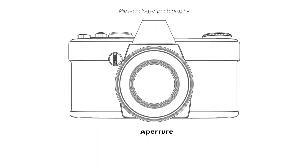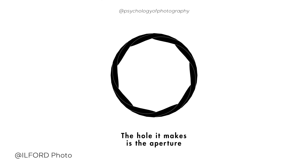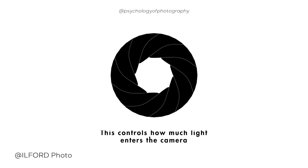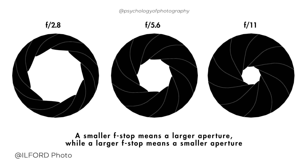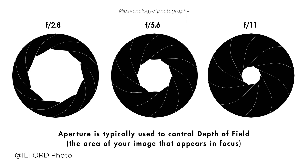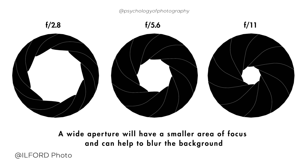Here are some tips for using aperture to improve the exposure of an image. If you are shooting in low light, use a larger aperture or a lower f-stop number to let in more light. If you want to isolate your subject and make them stand out against a blurred background, use a larger aperture. Experiment with different aperture settings to find the perfect balance between depth of field and exposure. Use a tripod to steady your camera if you are using a smaller aperture to avoid camera shake.